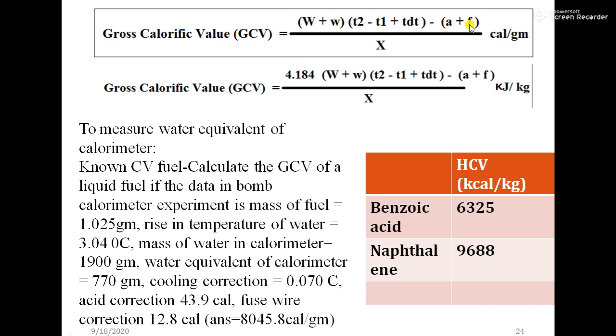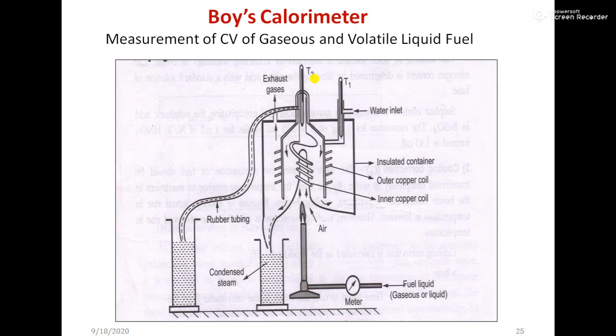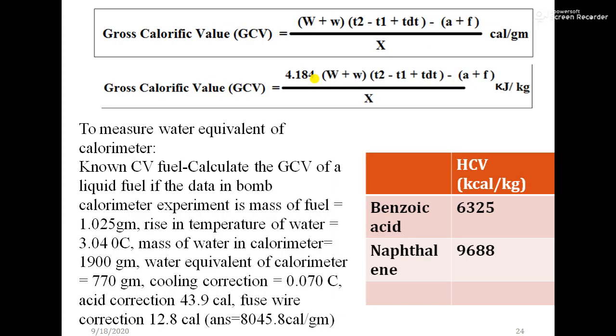This is in the form of calorie per gram. If you want value in joule per gram, you have to multiply that total value by 4.184. That is the correction formula. Next numerical based on that correction formula, you can see.